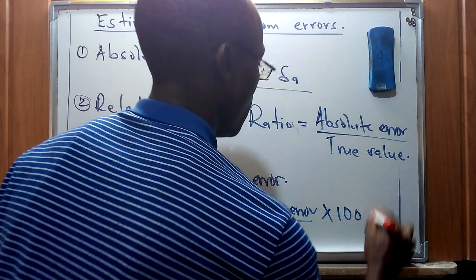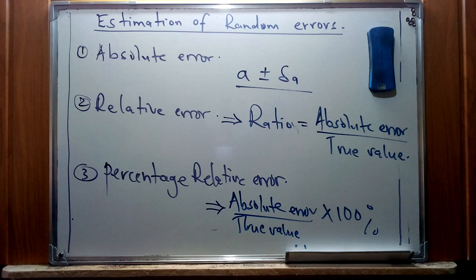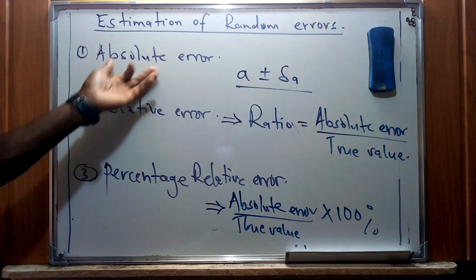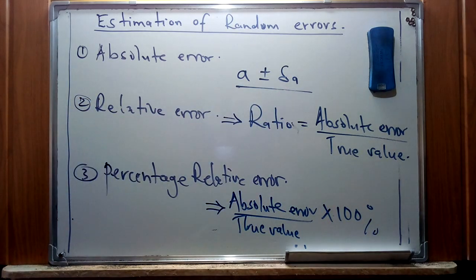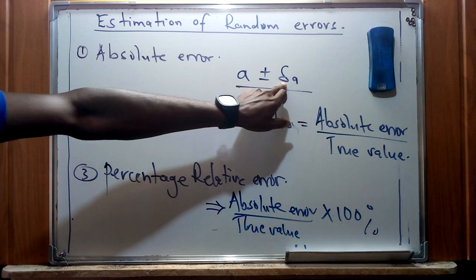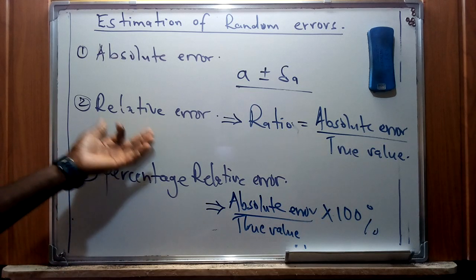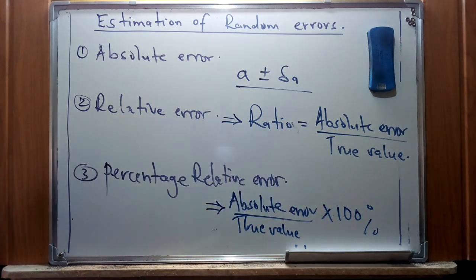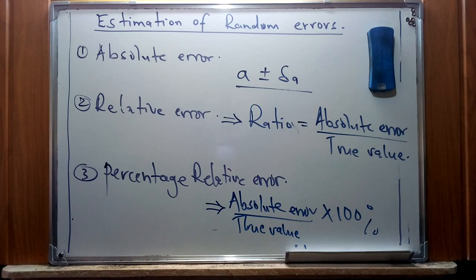These are the standard ways in which we express these methods of recording data. The absolute error is the size of uncertainty expressed in the same units as the quantity. For relative error, we have the ratio between the absolute error and the true value. And the percentage relative error is the expression of the relative error as a percentage.